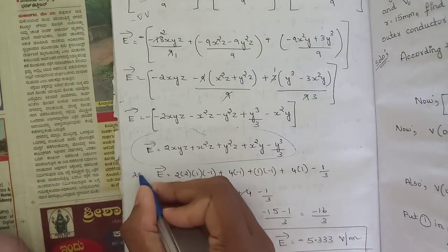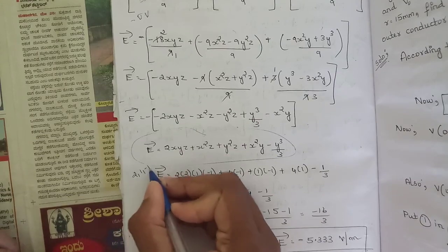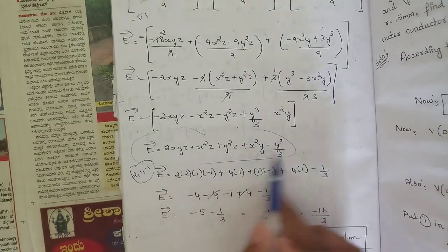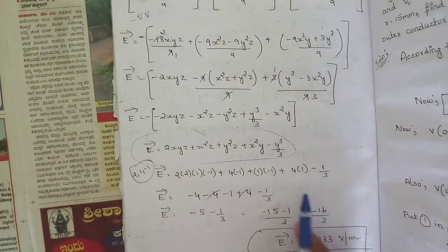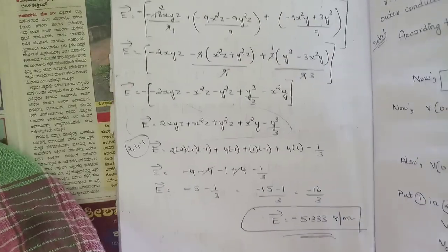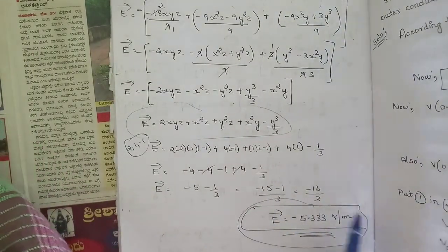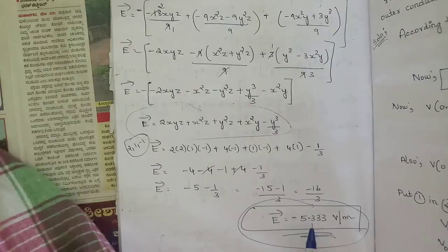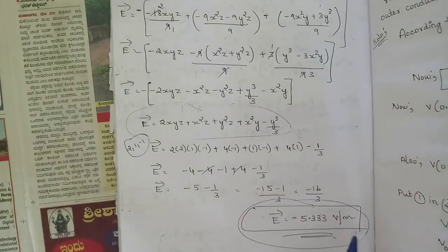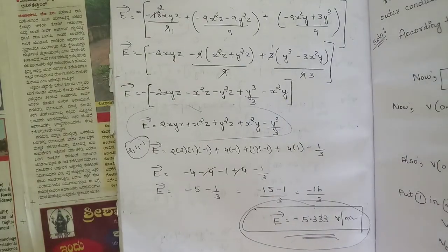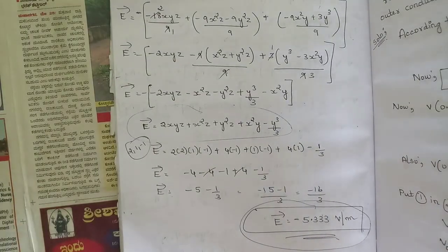Substituting point P(2, 1, −1) into the expression for E: replace x = 2, y = 1, z = −1 in each component and simplify. After simplification, the value of E is −5.333 volts per meter. Please pause the video and note the solution.